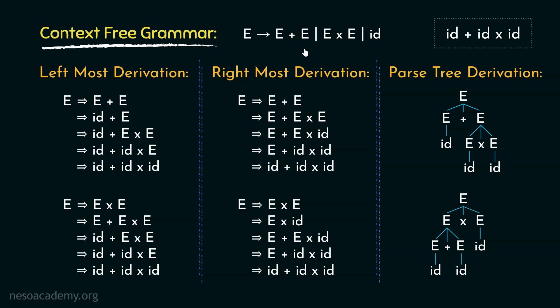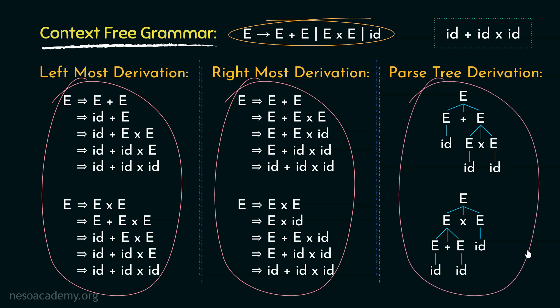Now remember this: for any grammar, if we obtain either more than one leftmost derivations or more than one rightmost derivations or more than one parse tree, then the grammar is clearly ambiguous.